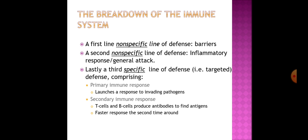The first line of defense is a non-specific line consisting of barriers. The second is a non-specific line involving the inflammatory response, or general attack. Lastly, the third is a specific line of defense comprising both the primary immune response and the secondary immune response.